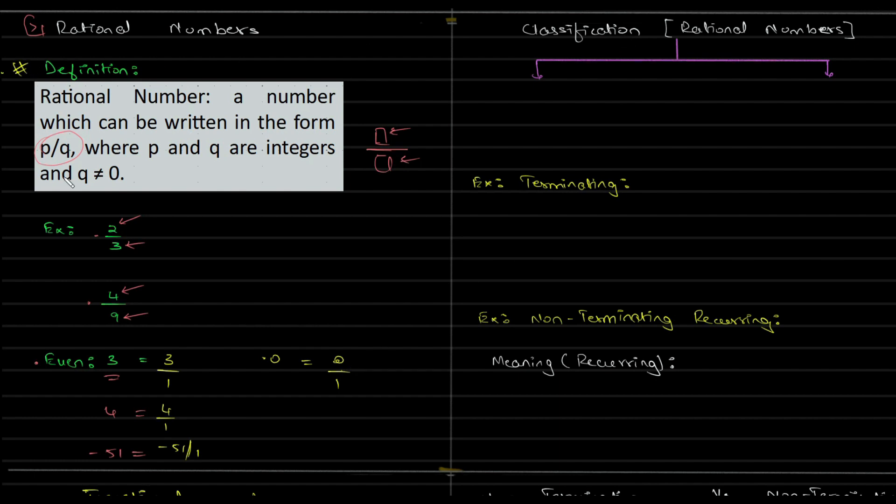There is classification of rational numbers to what? To terminating, non-terminating, and non-terminating recurring. What does it mean? Have you heard of the movie Terminator? It basically means in layman terms to stop, make things stop.